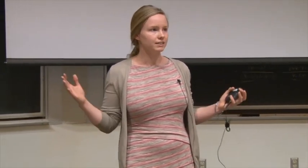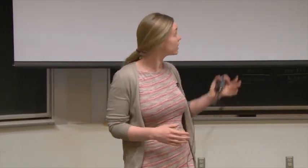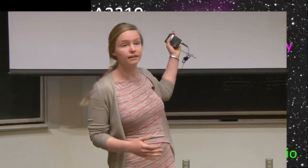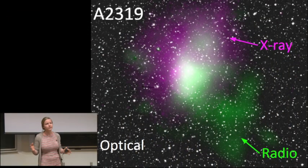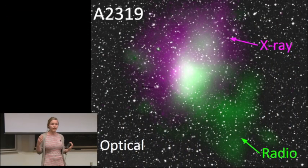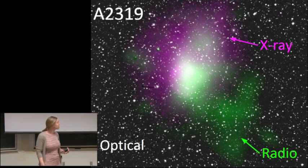Galaxy clusters are the most massive objects in the universe. There are several different components to a galaxy cluster, like this one behind me, named A2319. And each component can be studied with an observation at a particular wavelength of light.